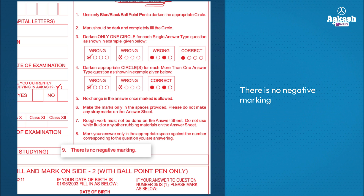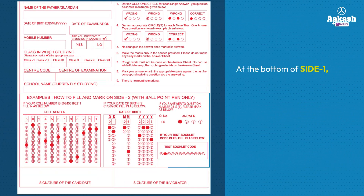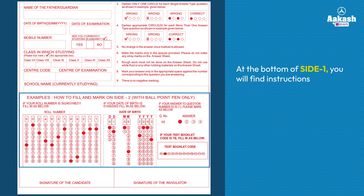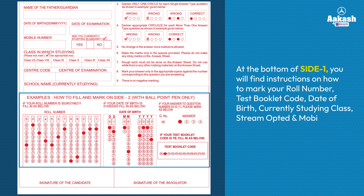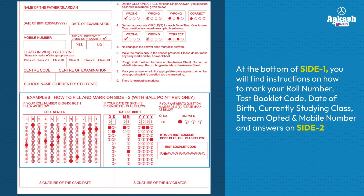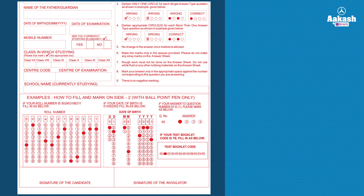There is no negative marking. At the bottom of side one, you will find instructions on how to mark your roll number, test booklet code, date of birth, currently studying class, stream opted and mobile number and answers on side two.